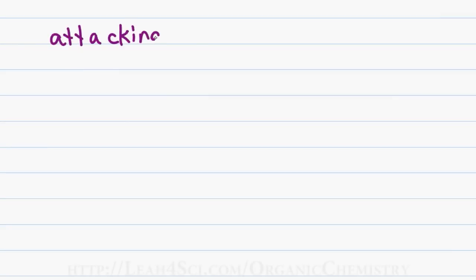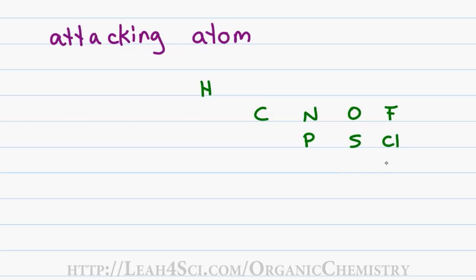The next thing you want to look at is the attacking atom. When you have two atoms that both have the same charge, you have to look at which one is more reactive when holding that charge. There are over a hundred elements on the periodic table but I highly recommend memorizing the placement of the following ten atoms. Knowing where these atoms occur on the table helps you remember the following two trends.